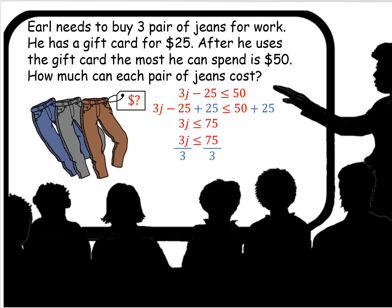So we're going to come up with our inequality. 3j, the j meaning the number of jeans, minus 25, that's the gift certificate, has to be less than or equal to $50.